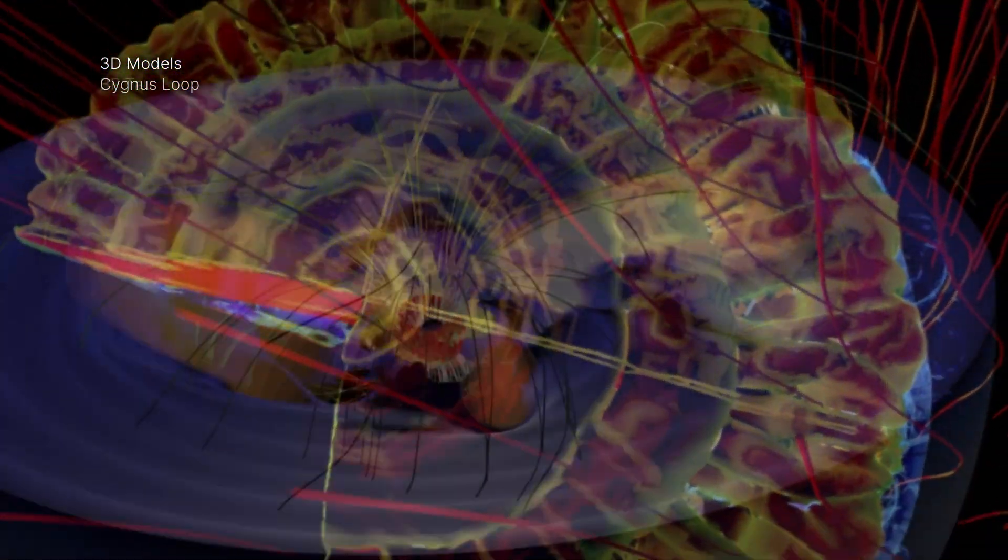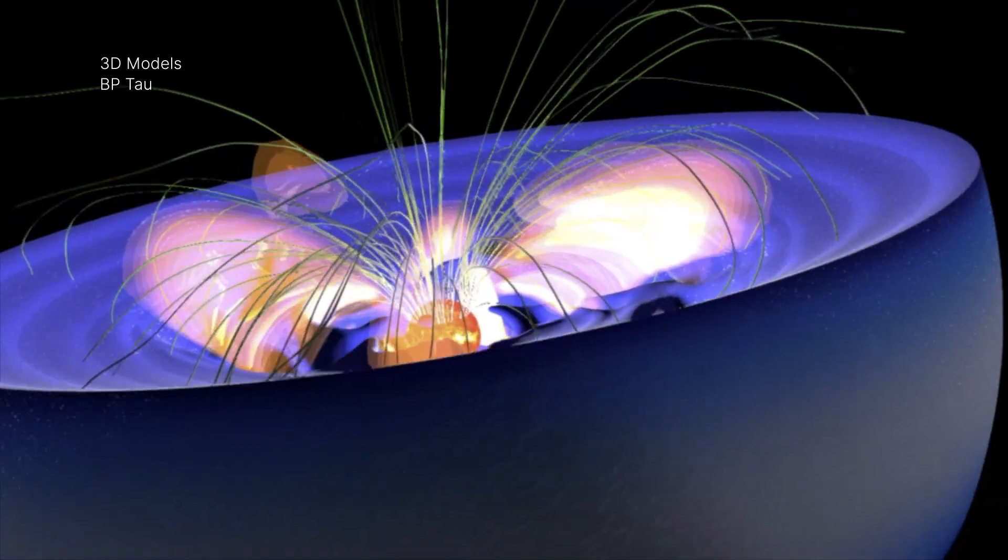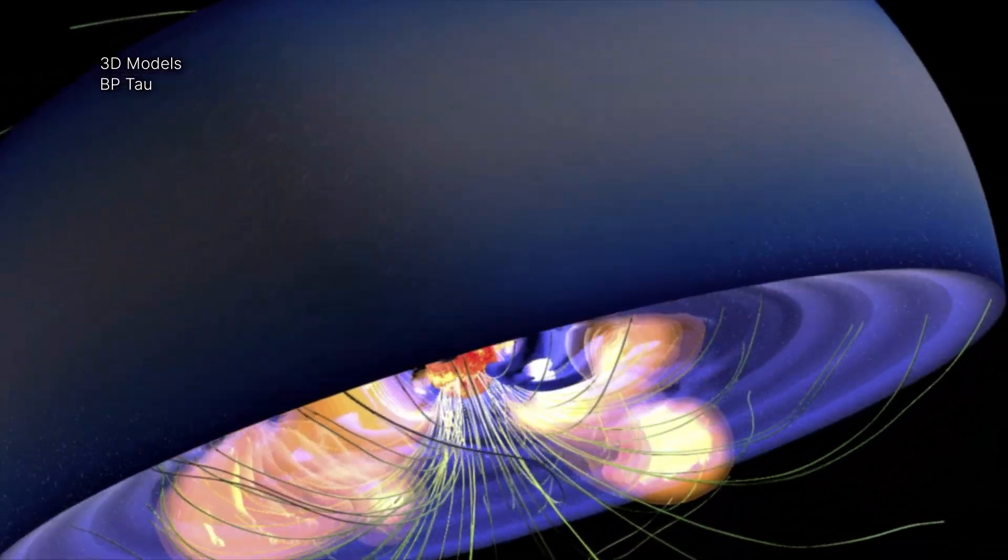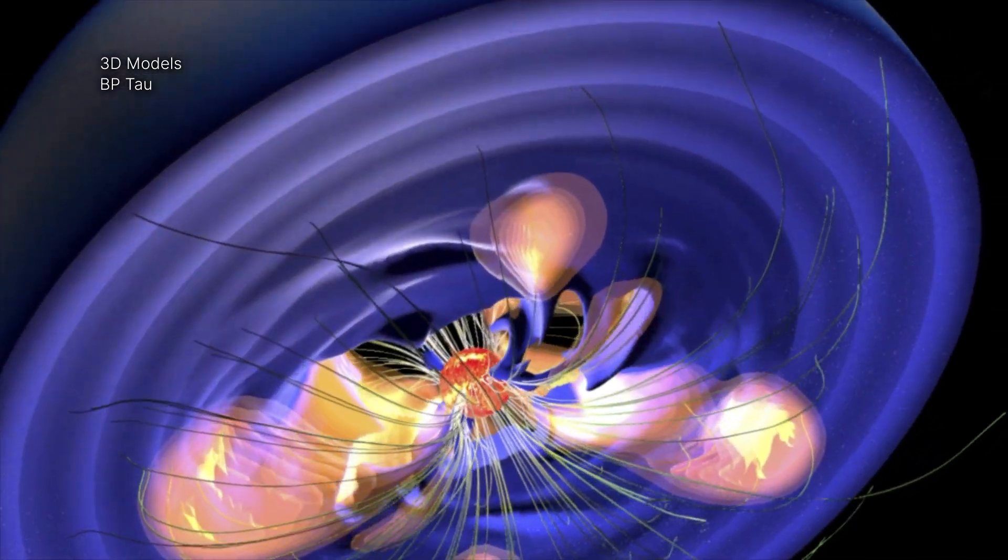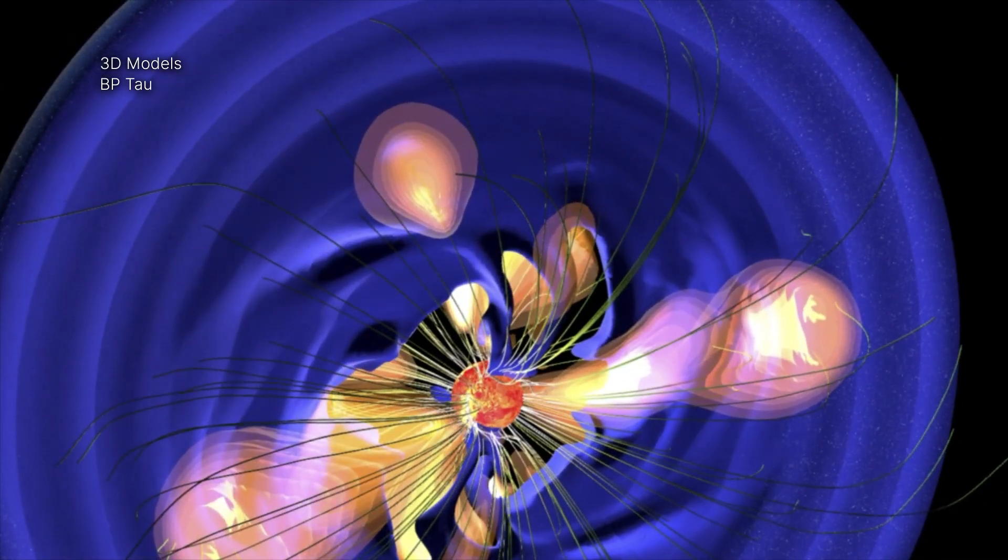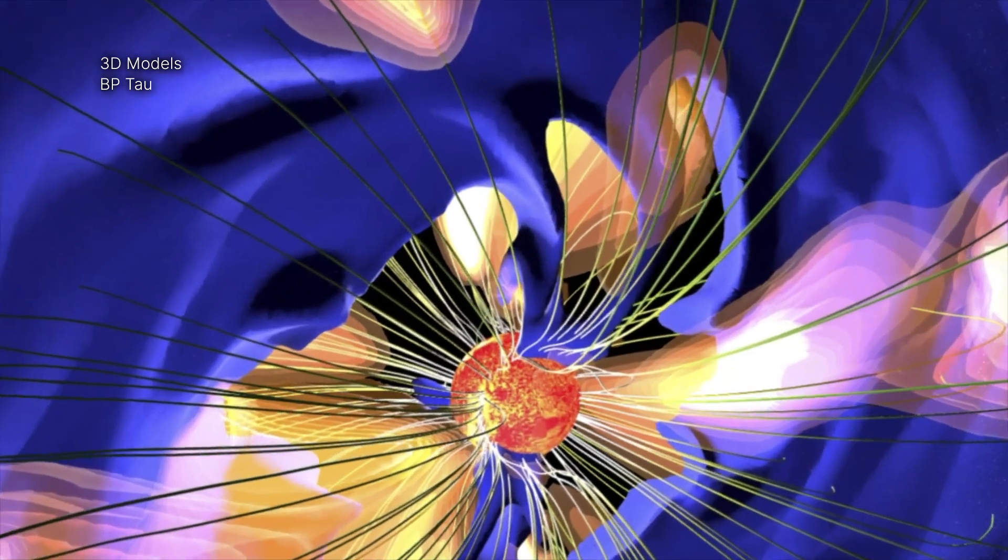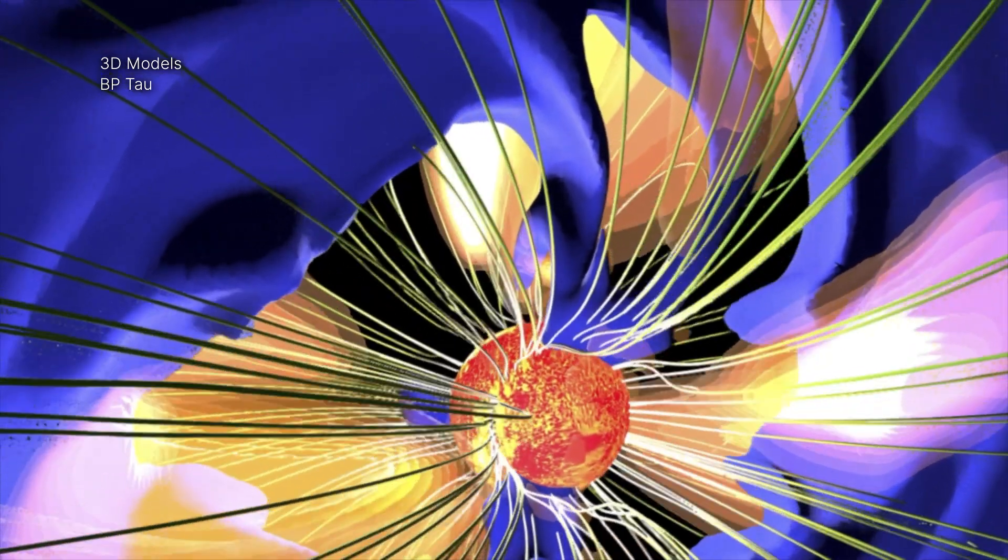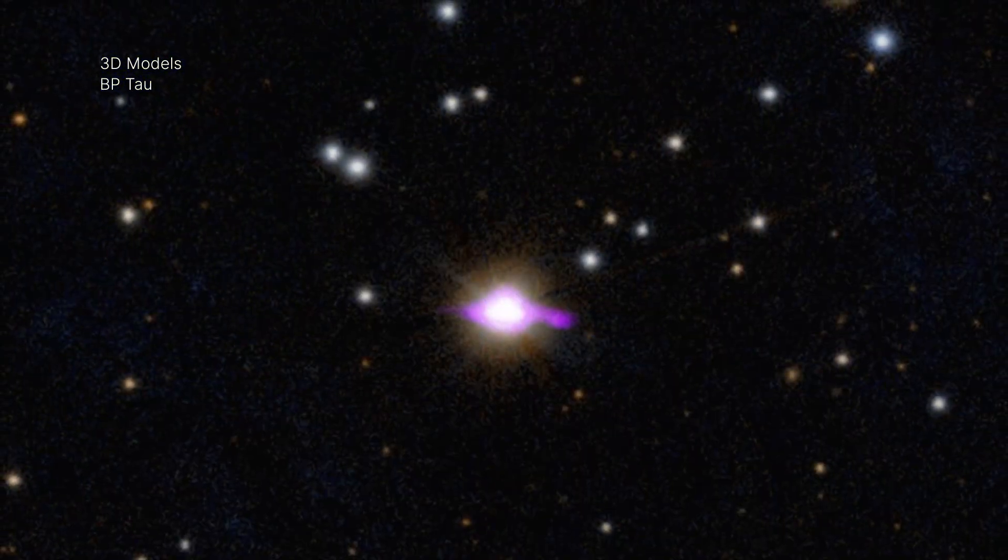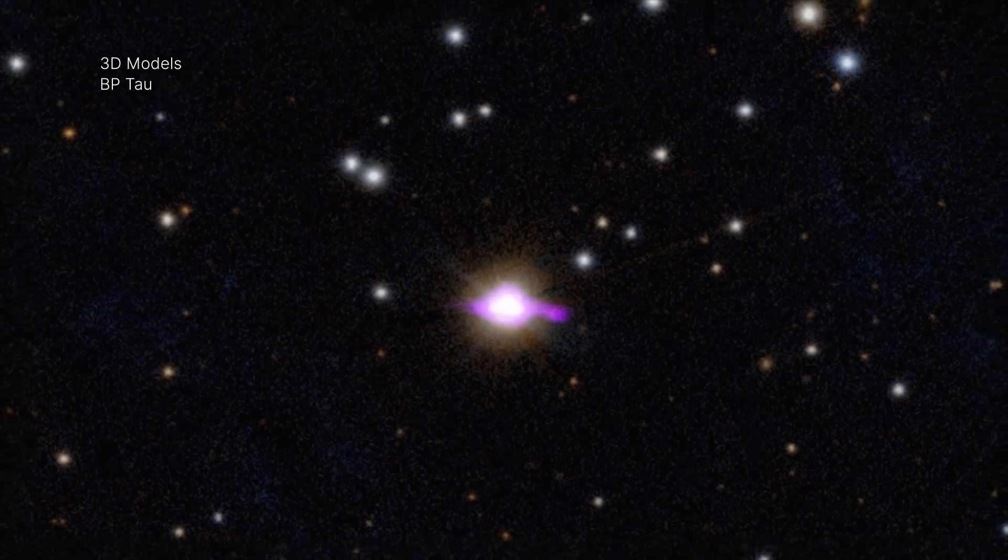Finally, a 3D model shows a star less than 10 million years old that is surrounded by a disk of material. This object, called BP Tau, has flares that interact with a disk of material surrounding this infant star. Looking at BP Tau gives us insight into our own sun, billions of years ago.